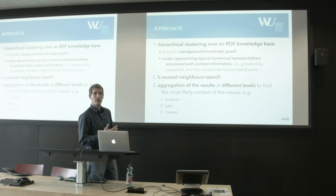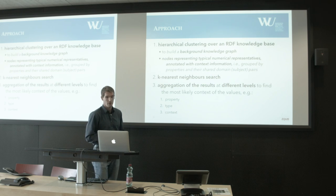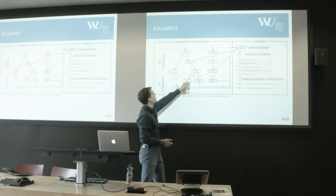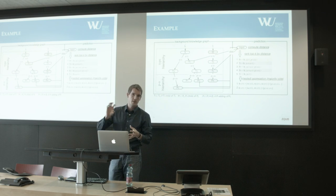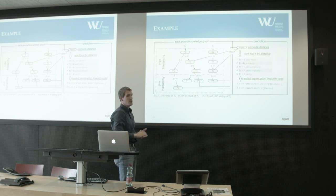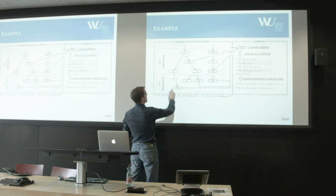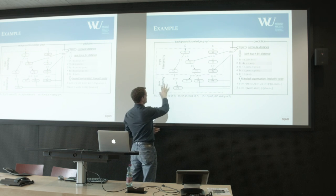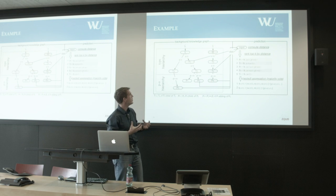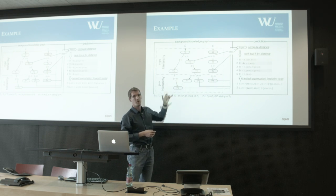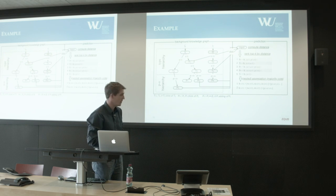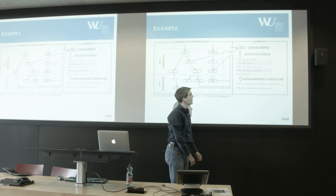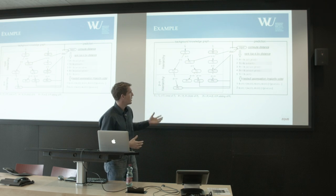For example: what is the most likely property where these numbers came from? Maybe we get the type and the context. Here's an example: we have a background knowledge graph where each node represents a set of numbers with annotations. We have a type hierarchy and a PO hierarchy where each node represents entities for a property sharing the same PO pairs. Once you have an input value, you map the distance, get resources back, and do aggregation to get the most likely type.